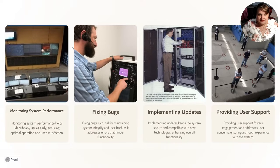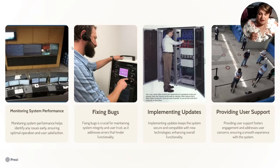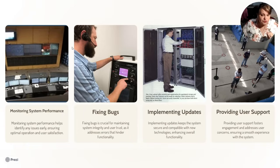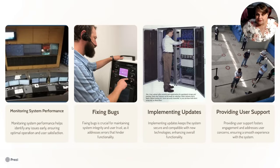Key activities in the maintenance phase: monitoring system performance — you might have QA feedback or stats from your program. Fixing bugs encountered during maintenance, since you can't control everything and bug reports will come in. Implementing updates, such as updates for a new system chip. Providing user support. Monitoring helps identify issues early ensuring optimal operation; fixing bugs maintains system integrity and user trust; implementing updates keeps the system secure and compatible with new technologies; and providing user support fosters engagement and ensures a smooth experience.